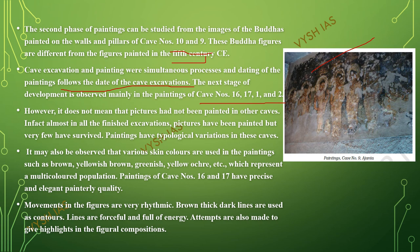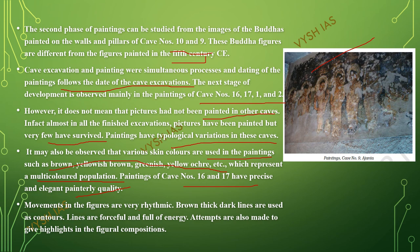This does not mean that paintings were absent in other caves — in almost all the caves, pictures were painted after excavation, but very few have survived. The paintings have typological variations. Various skin colors are used, such as brown, yellowish brown, and greenish yellow, representing a multi-colored population. The paintings of Cave numbers 16 and 17 have precise and elegant painterly quality; the movements of the figures are very rhythmic. Brown thick dark lines are used as contours; the lines are forceful and full of energy. Highlights are also applied to give emphasis in the figural compositions.